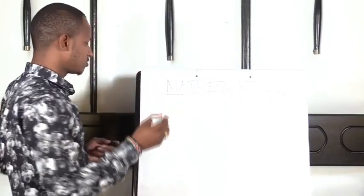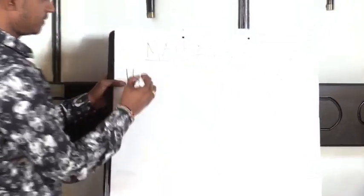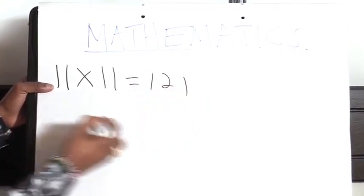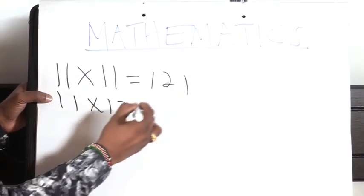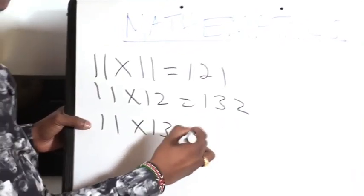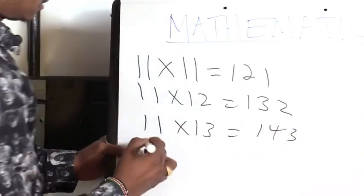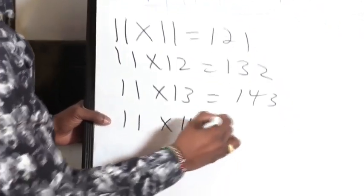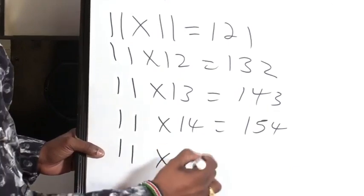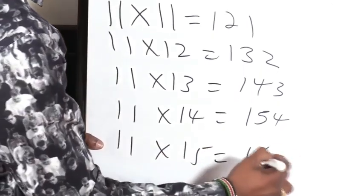Let's go to multiplication by 11. Let's say 11 times 11 gives us 121. 11 times 12 gives us 132. 11 times 13 gives us 143. 11 times 14 gives us 154. 11 times 15 gives us 165.